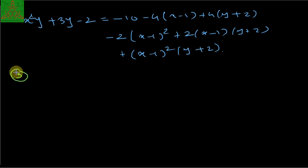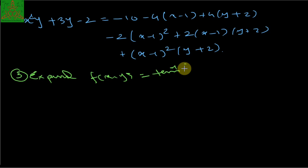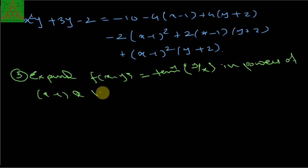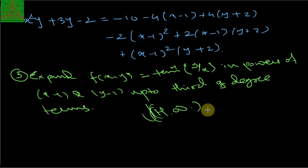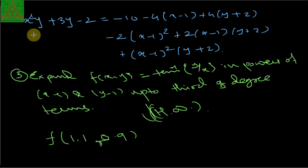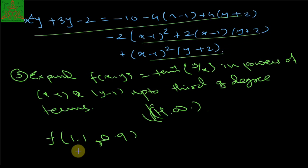The next example: let f(x,y) = tan⁻¹(y/x), expand in powers of (x−1) and (y−1) up to the second degree term. This is given as exercise work — you can try to find the Taylor series yourself. You can also approximate the value f(1.1, 0.9) using the series you obtain, since the Taylor and Maclaurin series are used to approximate functions — that is the objective.